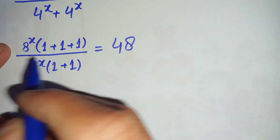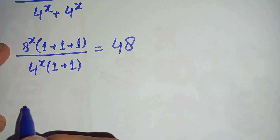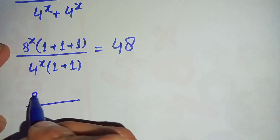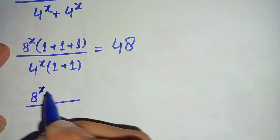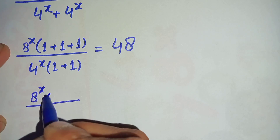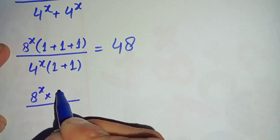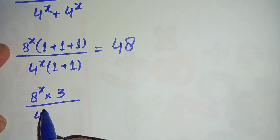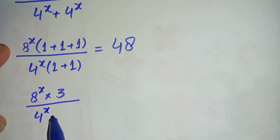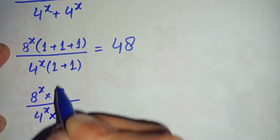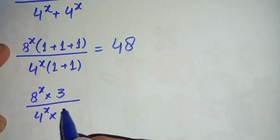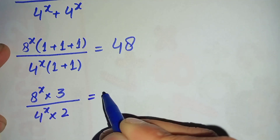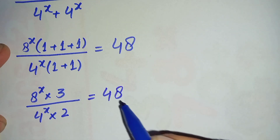This can be written further as 8^x times 3 divided by 4^x times 2, which is equal to 48.